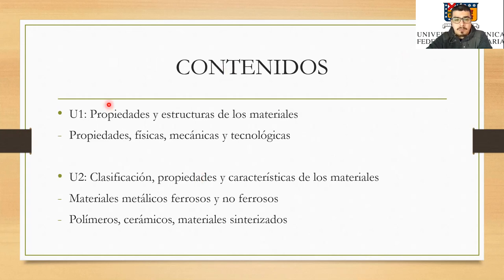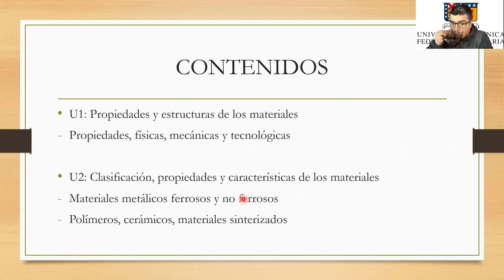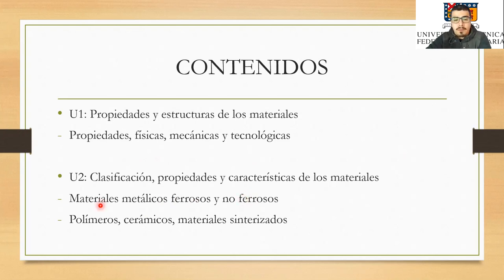Los contenidos incluyen: propiedades y estructura de los materiales, clasificación y características de materiales metálicos ferrosos —aceros y fundiciones— y materiales metálicos no ferrosos como cobre y aluminio. También veremos polímeros, cerámicos y materiales sinterizados, que ya son materiales mucho más adelantados. En la clase de hoy les dejo un link a un video de una presentación, como siempre, para ayudarles a entender mejor. Por ejemplo, hay un video de España donde hicieron un puente con material sinterizado.